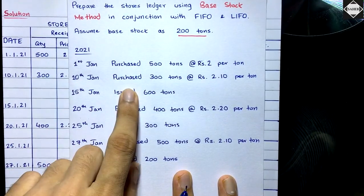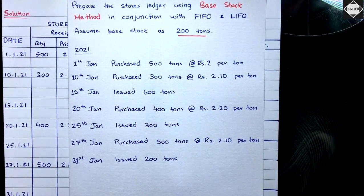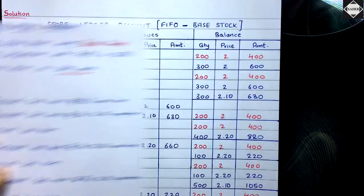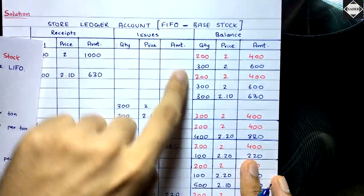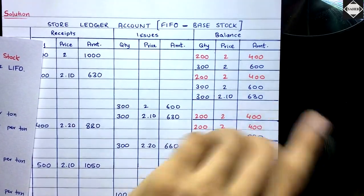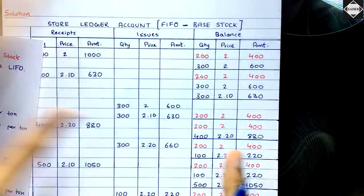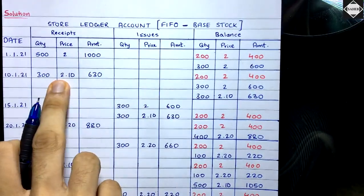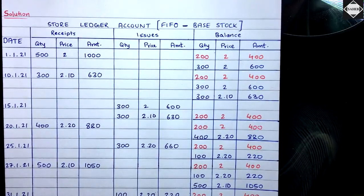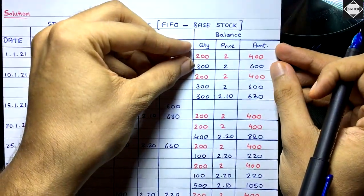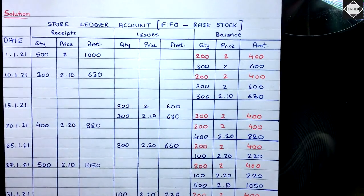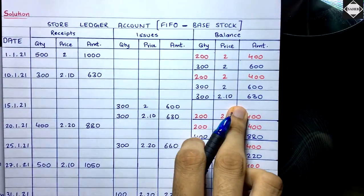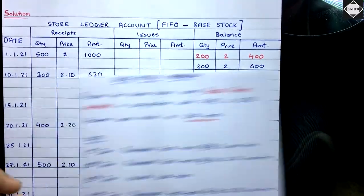On 10th January, another purchase of 300 tons at ₹2.10 per ton. In FIFO, whenever we get a purchase, we draw a line, copy the existing balance column lots below — 200 × ₹2 = ₹400 and 300 × ₹2 = ₹600 — then add the new purchase below: 300 × ₹2.10 = ₹630.